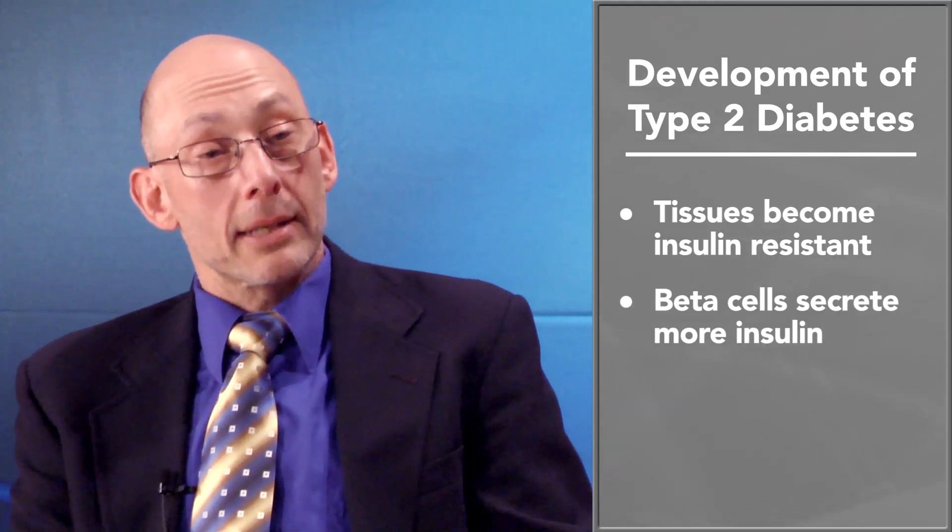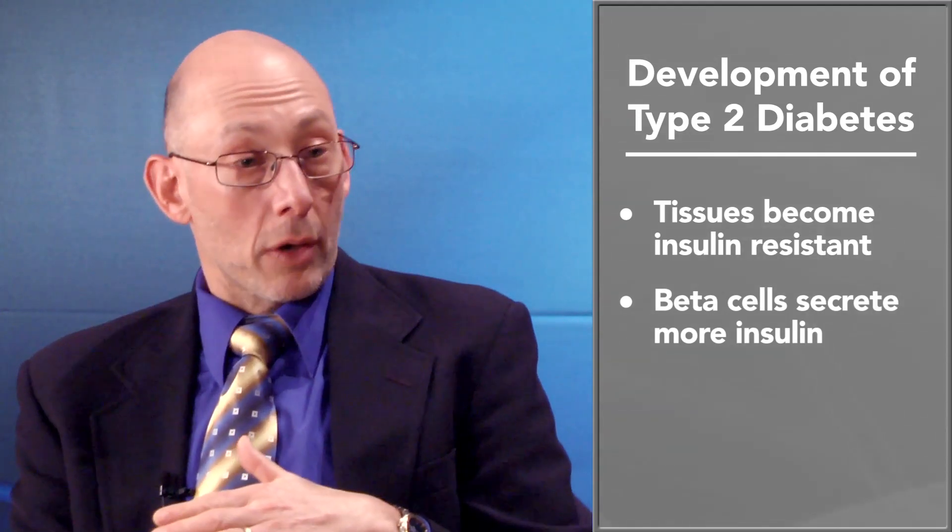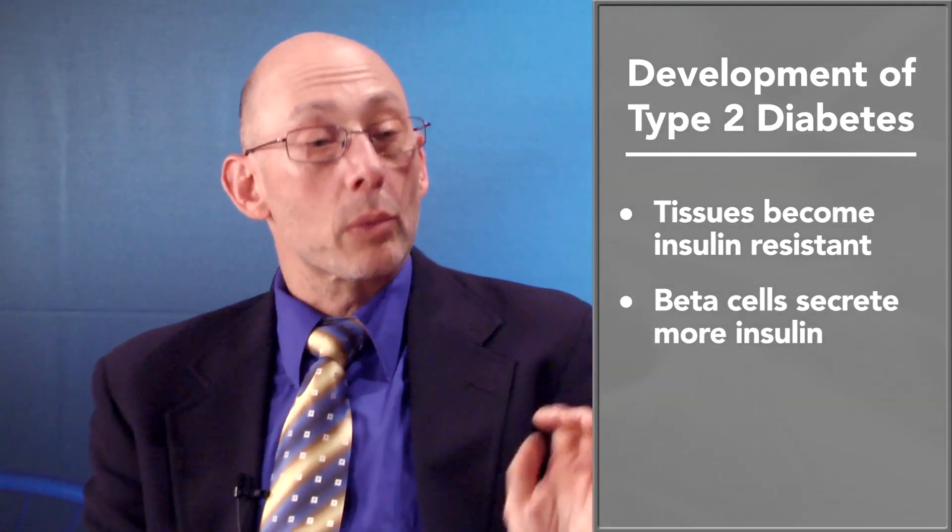Yes, for type 2 diabetes it is possible in the early stages, not usually in the late stages. You have to understand the etiology — the development of type 2 diabetes. It starts out because some of your tissues, like muscle, liver, and adipose tissue, are not responsive to insulin. So your beta cells of the pancreas secrete more insulin to make up for that insensitivity, and that brings your glucose back down. But it's producing more insulin than it normally should — typically that's what you'd call a pre-diabetic.